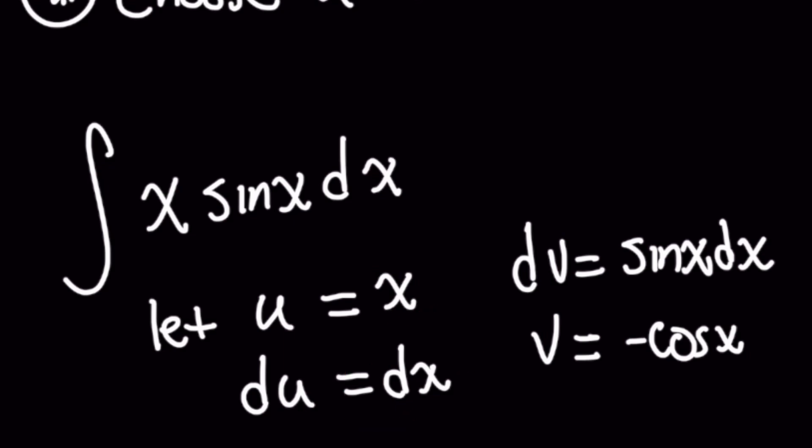Now on the right hand side the way I think about it is I pretend that I make the u term vanish from the original integral. Pretend that x isn't there. What do you have left? Well it's sine of x dx and that's going to be your dv term.